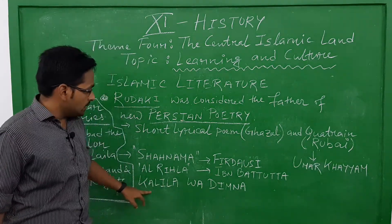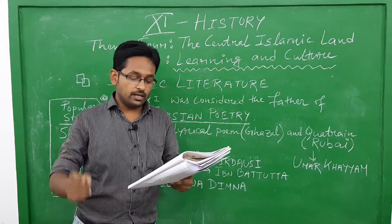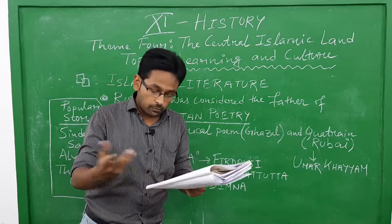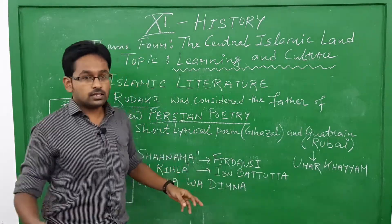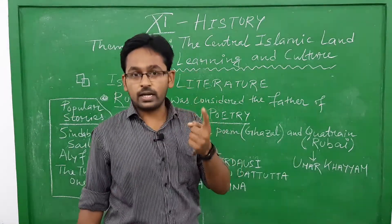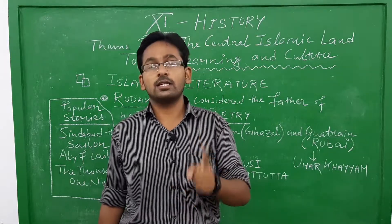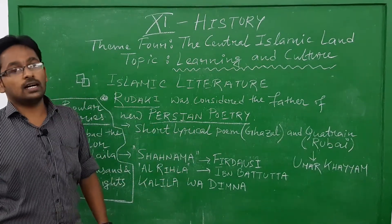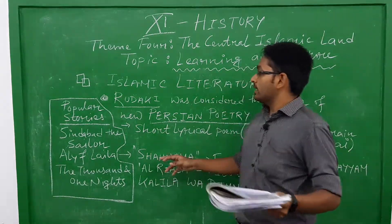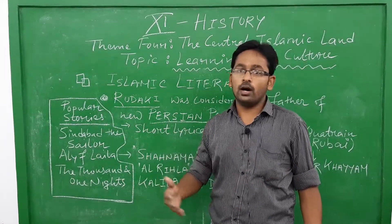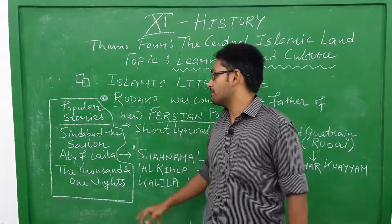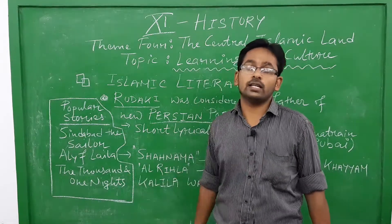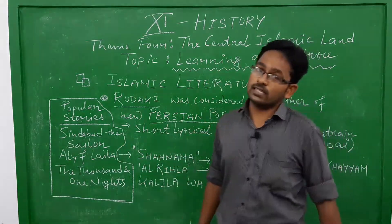There is another book called Kalila wa Dimna. It is a collection of animal fables, and some people believe it was a translation of the Panchatantra — the famous animal fables written by Vishnu Gupta in India. Popular stories from Islamic literature include Sindbad the Sailor, Alif Laila, The Thousand and One Nights, and Aladdin. These represent the development of Islamic literature.